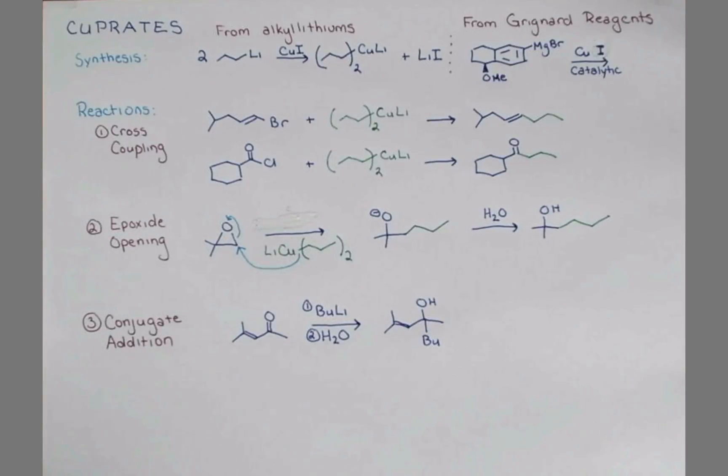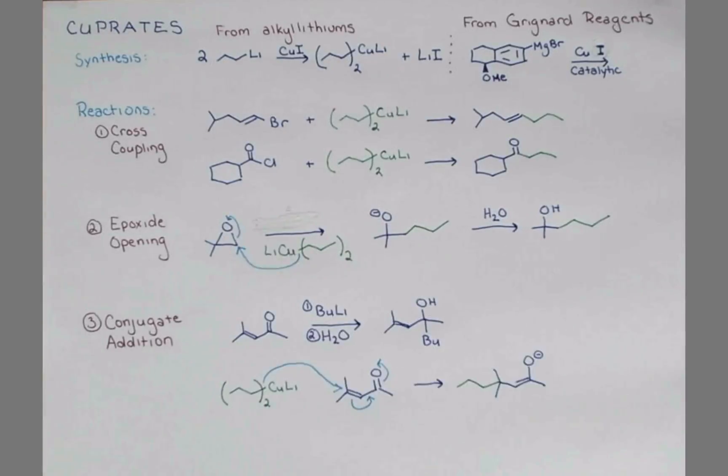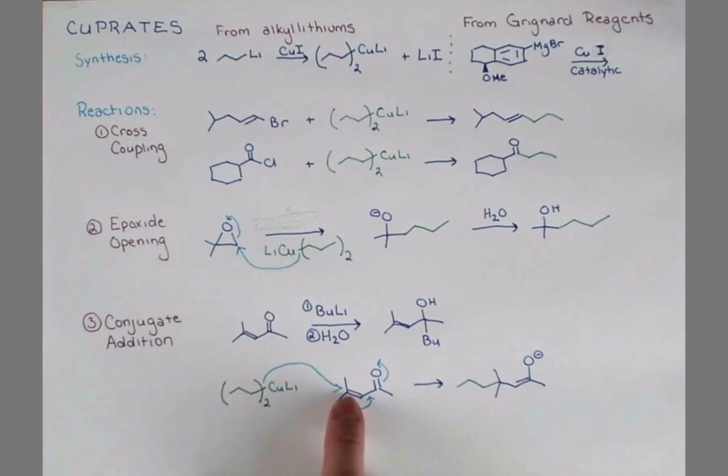But cuprates do something very different. Cuprates instead do conjugate addition, or 1,4 addition. They attack at this terminal carbon at the end of the conjugated system. The arrow pushing looks like this. So our cuprate has added here. This double bond has shifted over, and we push the electrons up onto oxygen. This compound is protonated and reforms the ketone. And one way to show the arrow pushing is like this.